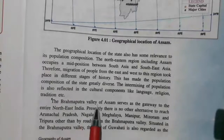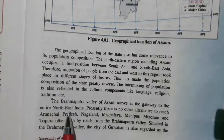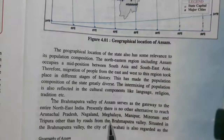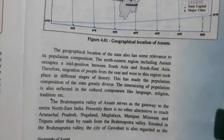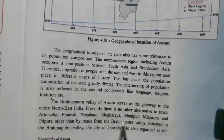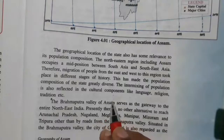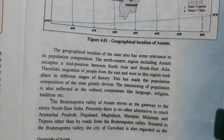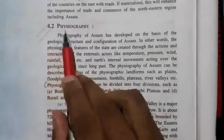The Brahmaputra Valley of Assam serves as the gateway for the entire Northeast India. Presently there is no other alternative route to reach Arunachal Pradesh, Nagaland, Meghalaya, Manipur, Mizoram, and Tripura. If you want to go to any of those states, you have to pass through Assam — specifically Guwahati. That is why Assam is very important for all those northeastern states.